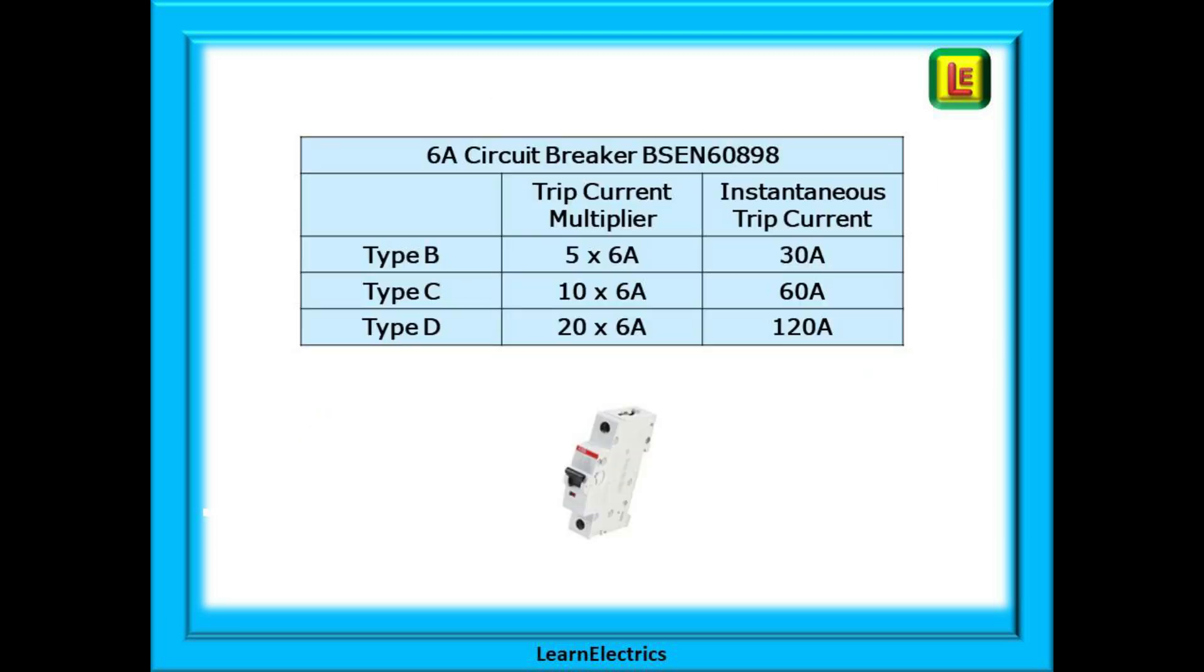Let's look at what this means to a 6 amp MCB if there was a fault at the consumer unit. Again we are looking at worst case scenarios. A type B breaker needs five times its rating to make it trip almost instantly. 5 times 6 amps is 30 amps of fault current. A type C 6 amp MCB needs 10 times the rating which is 60 amps and a D type needs 20 times 6 amps or 120 amps in order to achieve near instantaneous tripping.